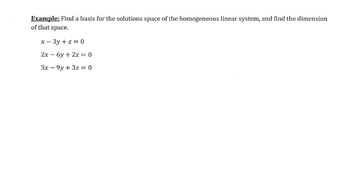To get started with this problem, what I'd like to do is write this in an augmented matrix setting. So in the first row, we'll have 1, negative 3, 1, 0. That will be after the augment bar that 0 is. Second row, we'll have 2, negative 6, 2, 0. And the third row will be 3, negative 9, 3, 0.